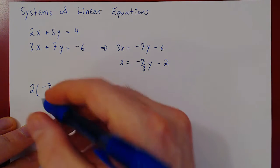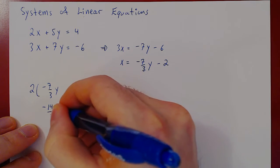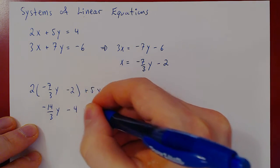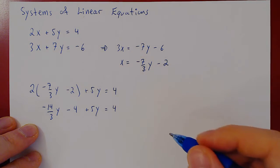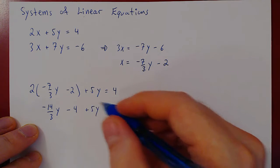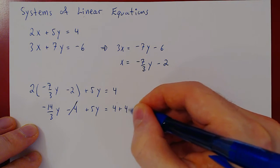Let's multiply by 2, so we'll get negative 14 over 3y minus 4, plus 5y equals 4. Add 4 on both sides, so you'll get 4 plus 4, which is 8.